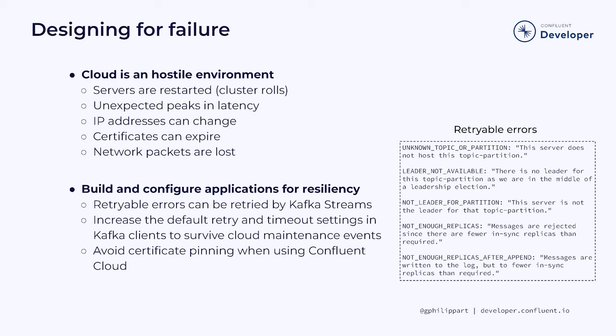If you're using Kafka Streams, most transient failures like network partitions, lead broker changes, or producer fencing will be retried and will only generate warnings most of the time. The default retry and timeout settings in the Kafka client aren't sufficient to survive across a normal cloud maintenance event like a broker restart or the assignment of a new IP address. The last thing you want is for these normal operations to trigger unnecessary internal alerts, so it's best to increase those settings.